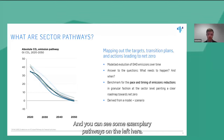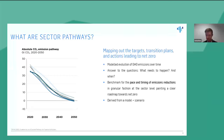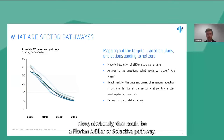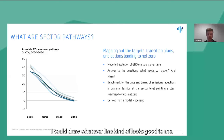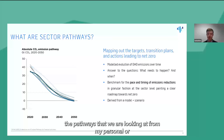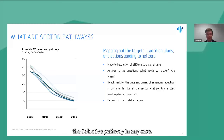You can see some exemplary pathways on the left here. At the end of the day, a pathway in general is just the evolution of one variable. Obviously, there could be a Florian Mueller or a Selective pathway — I could draw whatever line looks good to me. But the pathways we are talking about today are backed by serious science, which distinguishes them from, you know, my personal or the Selective pathway in any case.